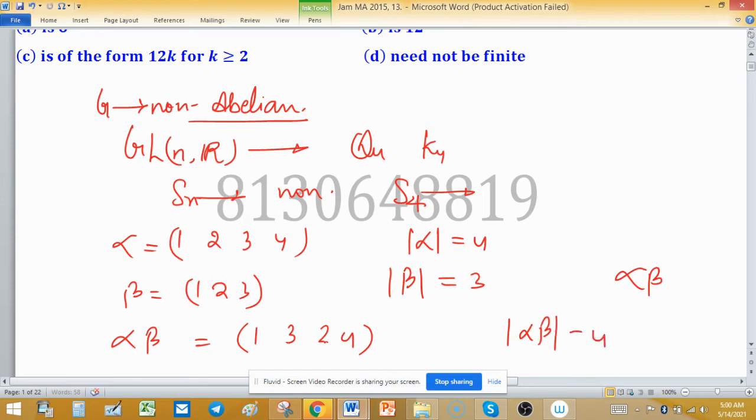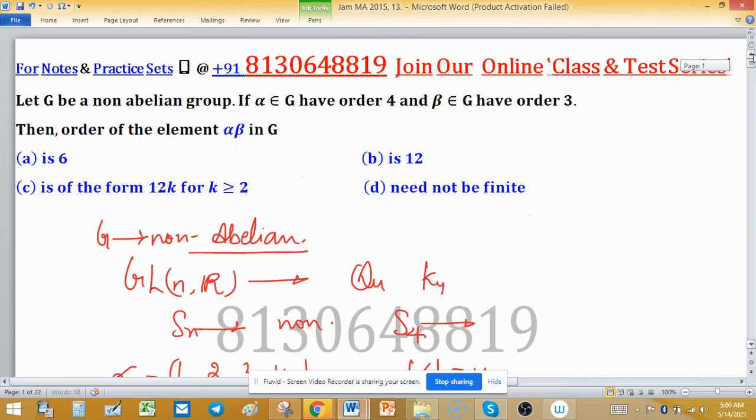Order of αβ is 4 because this is a disjoint cycle. As order of αβ is 4, you can see: is 6? Discard. Is 12? This is also discarded. Is of the form 12k where k ≥ 2? This is also discarded. So correct option will be option D.